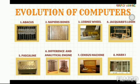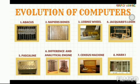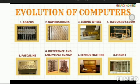As you can see, there are a total of eight images of different devices. All these devices were used for doing calculations. The need to keep track of numbers led to the invention of different calculating devices, starting from the abacus, the first calculating machine.